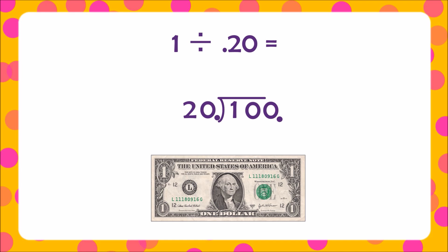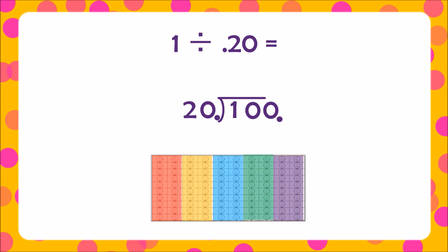Now let me explain why that works. Earlier when we were dividing one dollar by 20 hundredths, the answer was five — we broke our dollar apart by 20 hundredths and got five. When we rewrote the problem and shifted the decimal, the new problem became 100 divided by 20. Here's our 100, as in 100 cents or 100 pennies, and we found we repeatedly subtract 20 pennies each time. So instead of thinking of one dollar, we're thinking about 100 cents. 100 cents divided by 20 is also five.